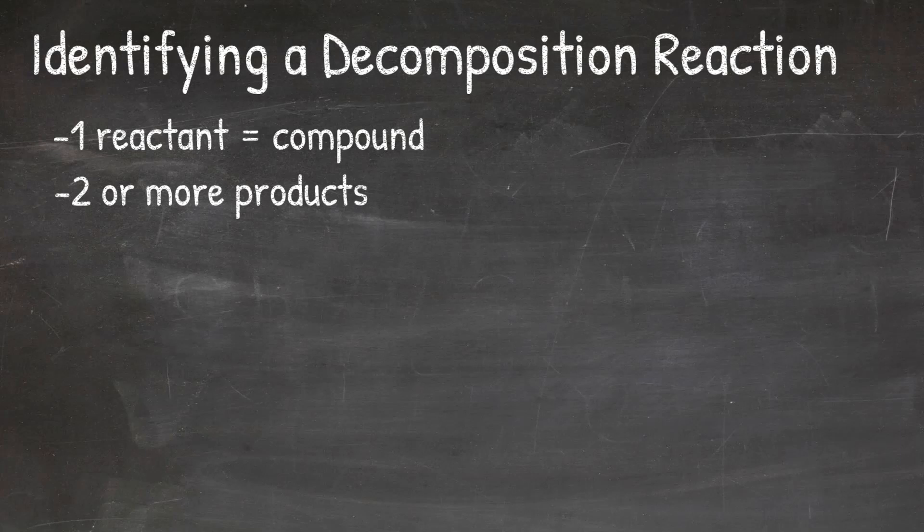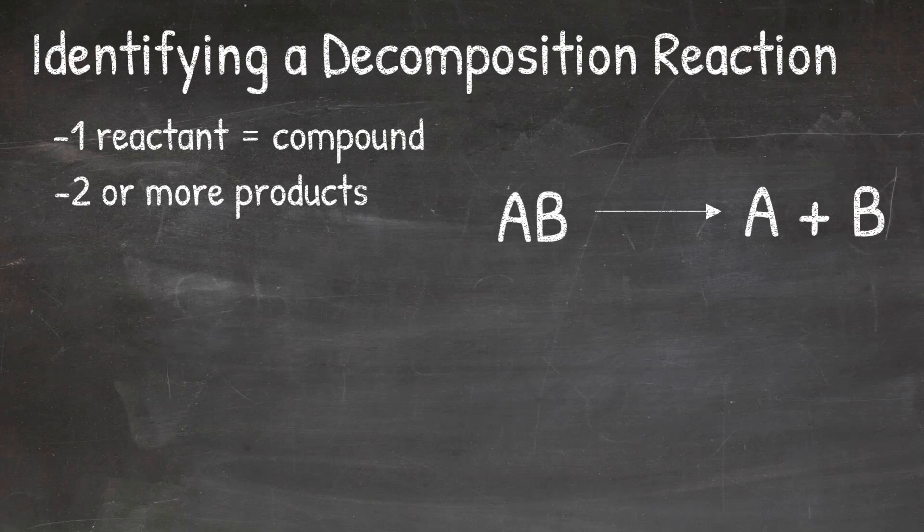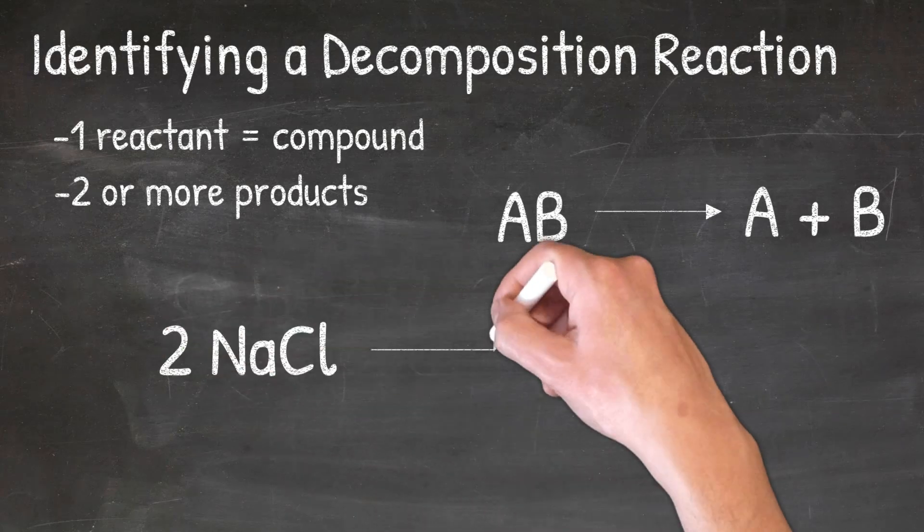We can represent a decomposition reaction using the generic equation AB yields A plus B, where we see one reactant, AB, that is breaking down into two products, A and B.